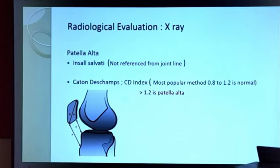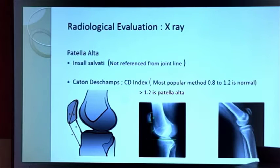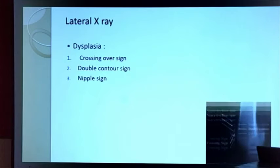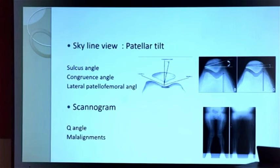Radiological evaluation is the key factor for planning. Patella alta can be seen on 30-degree knee flexion X-ray. There are many indices defined; I usually prefer the Caton-Deschamps index — if it is more than 1.2, it is patella alta, calculated as the ratio of patellar tendon to the articular surface. The lateral X-ray also shows trochlear dysplasia via the crossing-over sign and double contour sign, classified by David Dejour into four types: A, B, C, and D. Skyline view gives the sulcus angle and congruence angle for patella tilt. Always get a standing scanogram to assess malalignment in varus, valgus, and the Q angle.